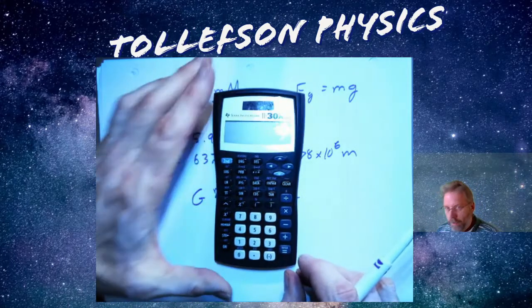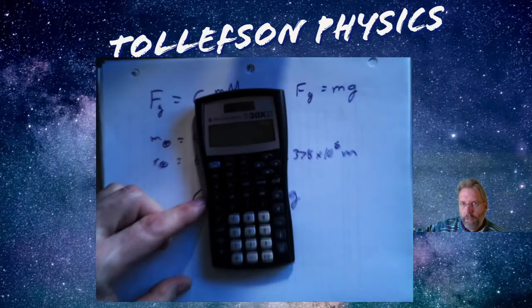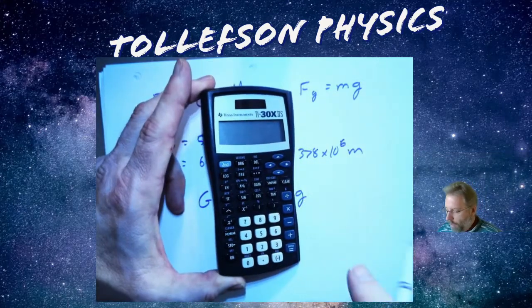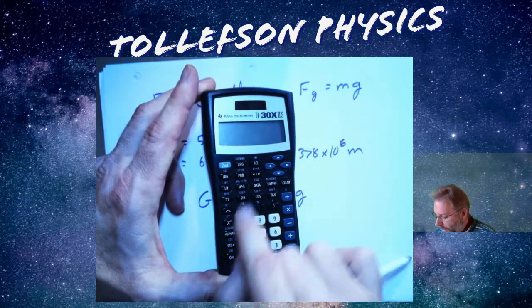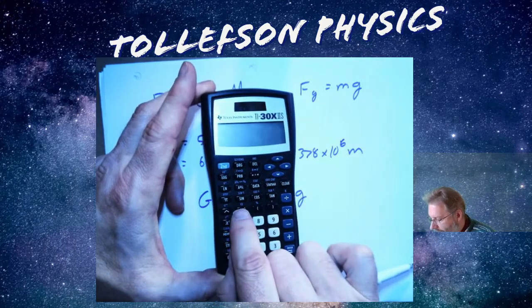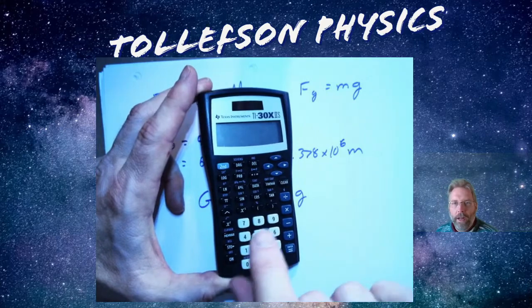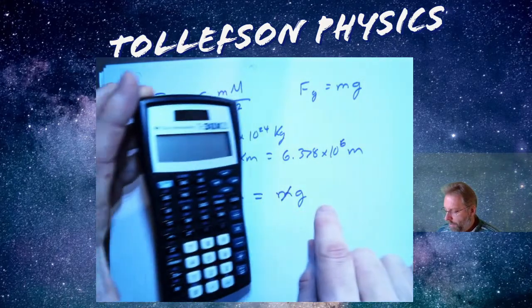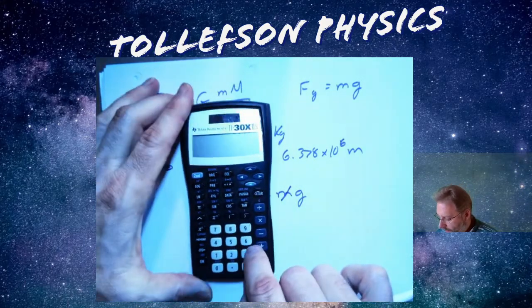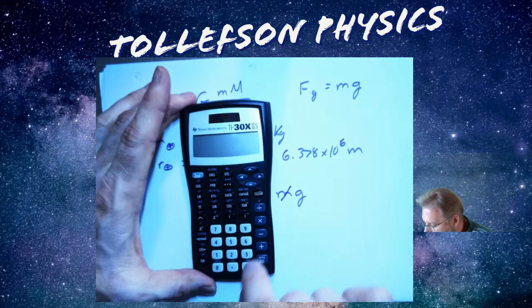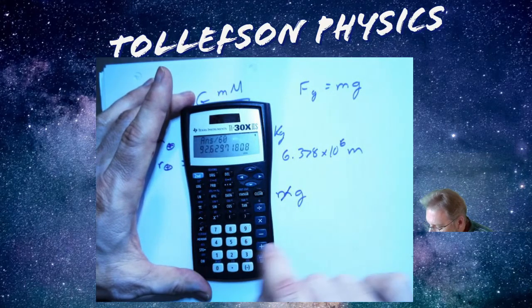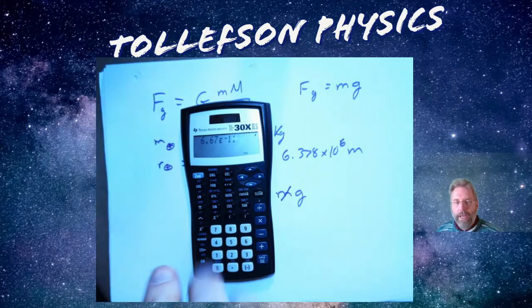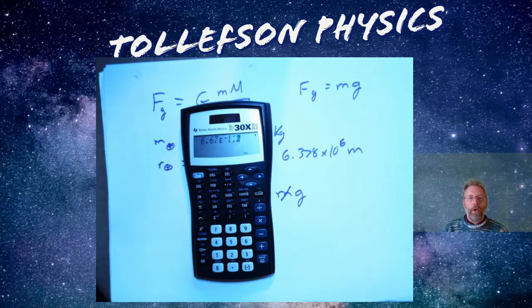I can go ahead and calculate this. One thing I want you to know and understand is when you're using a calculator - a lot of calculators have a function - on this one I hit second and there's a button that says EE. That is the way I recommend you put scientific notation into a calculator. It's 6.67 EE negative 11, and I don't need parentheses to do that.